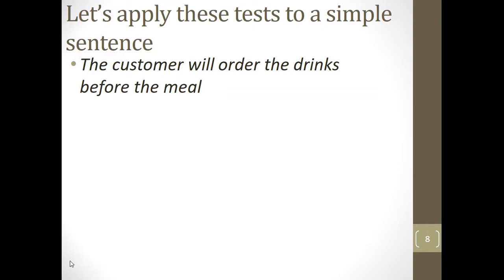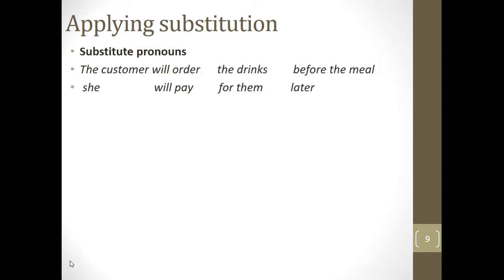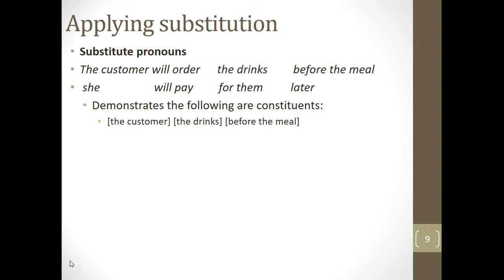Constituents, as you will recall, are chunks of language that hang together in ways that suggest they are part of a slightly bigger structure. Of course, we can't see the structures directly, but we can see the effects insofar as we can see the word orders. Starting with the substitution test: the customer will order the drinks before the meal — we can substitute pronouns, for instance, 'she will pay for them later.' Everything you can replace with a pronoun is probably a constituent, suggesting that 'the customer,' 'the drinks,' and 'before the meal' are constituents — two noun phrases and a prepositional phrase.